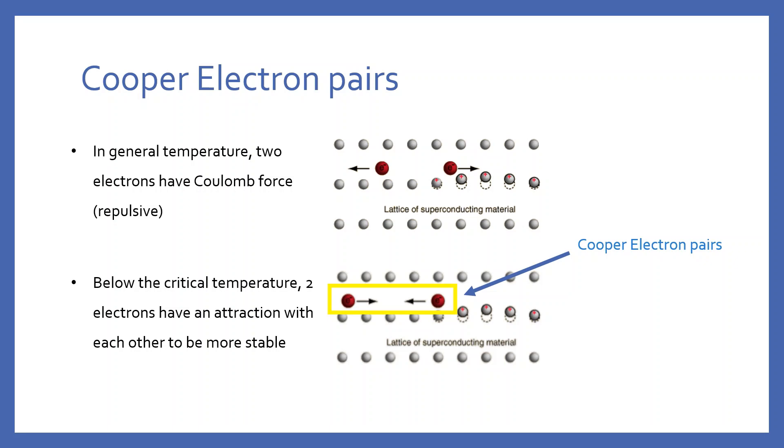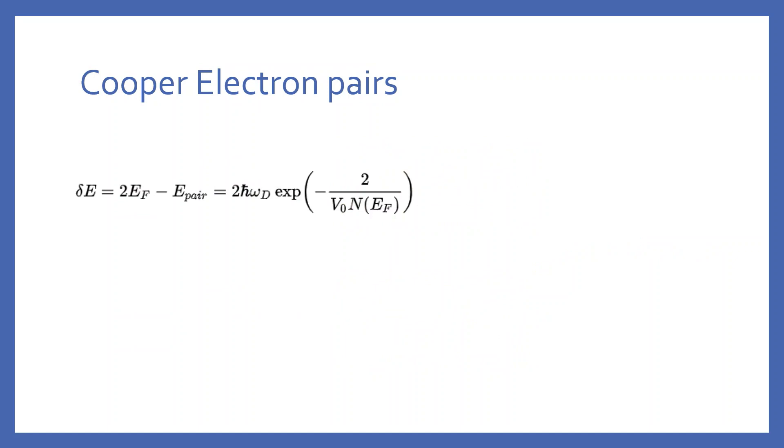Eventually, the electrons that pass first and electrons that follow later move in a pair, which is called the Cooper-electron pairs. This Cooper pair is the key to superconductivity.